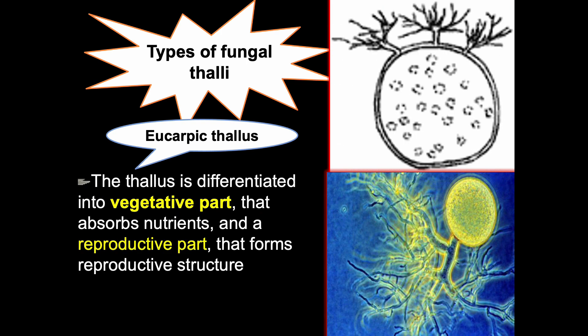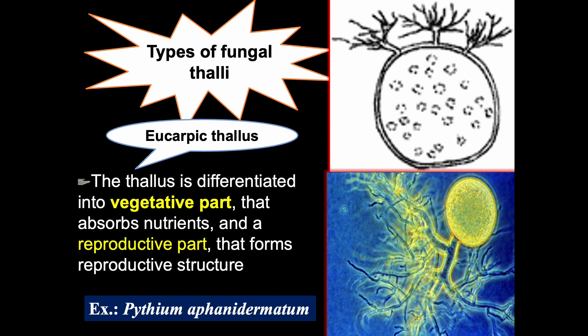Hyphal thalli are of many types. First is the eucarpic thallus, where the thallus is differentiated into a vegetative part that absorbs nutrients and a reproductive part that forms reproductive structures. Thus in eucarpic fungi you get two parts: one vegetative part for absorption of nutrients, and one reproductive part that forms reproductive structures. Organisms like Pythium and Phytophthora produce eucarpic thalli.